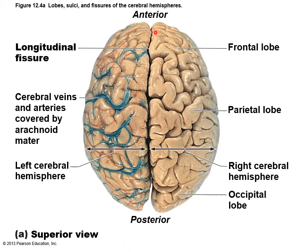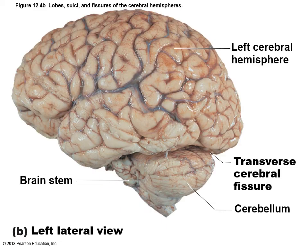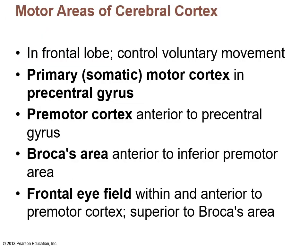Looking at the superior aspect of the brain, you can see the anterior and posterior cerebrum with the longitudinal fissure and approximate positions of the frontal, parietal, and occipital lobes, as well as the right and left cerebral hemispheres. In the lateral view, you can identify the temporal lobe, occipital lobe, parietal lobe, and frontal lobe, along with the transverse fissure separating the cerebrum from the cerebellum. The cerebrum makes up 83 percent of the brain's mass.